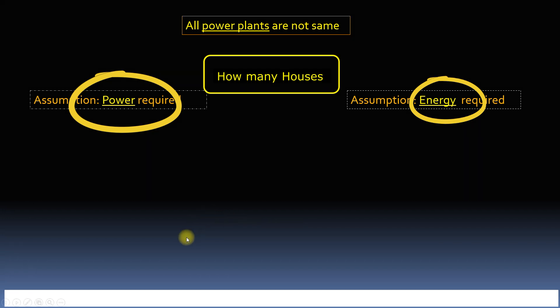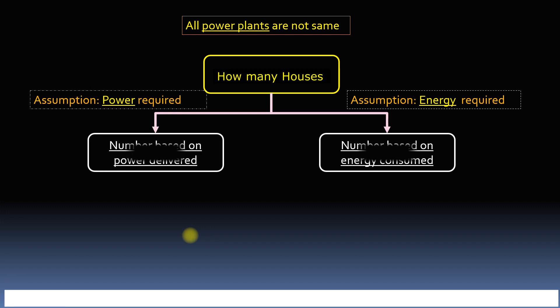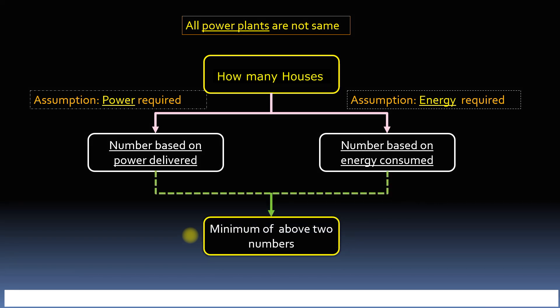That is number of houses based on energy consumed and number of houses based on power demand. Then the minimum of these two numbers can give us the estimate of number of houses one megawatt power plant can support. So let's start.